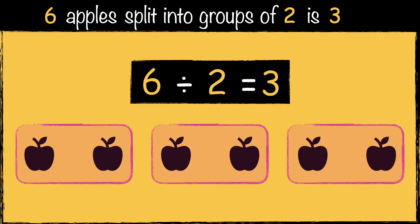Remember, in grouping we're making equal groups, not sharing them one by one. So instead of giving an apple to each person like we did when we looked at sharing, we're seeing how many groups of two we can make.